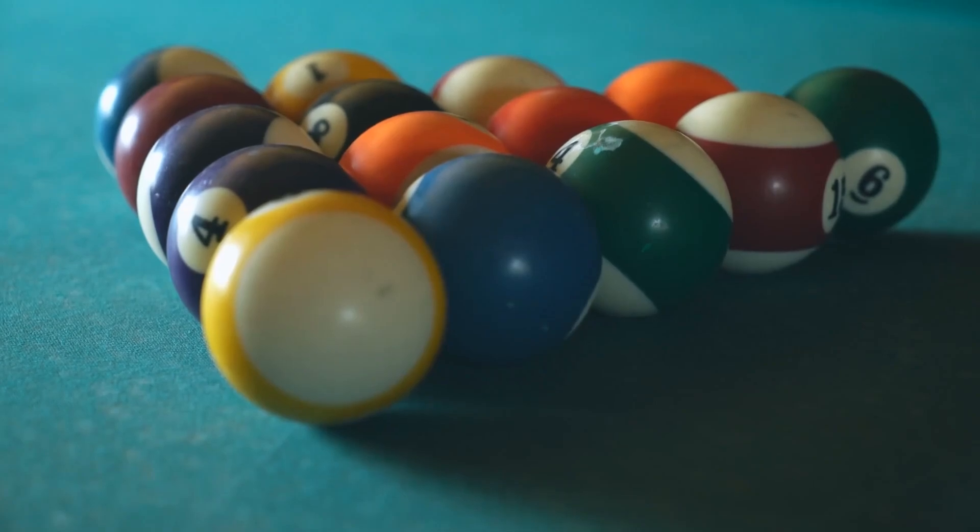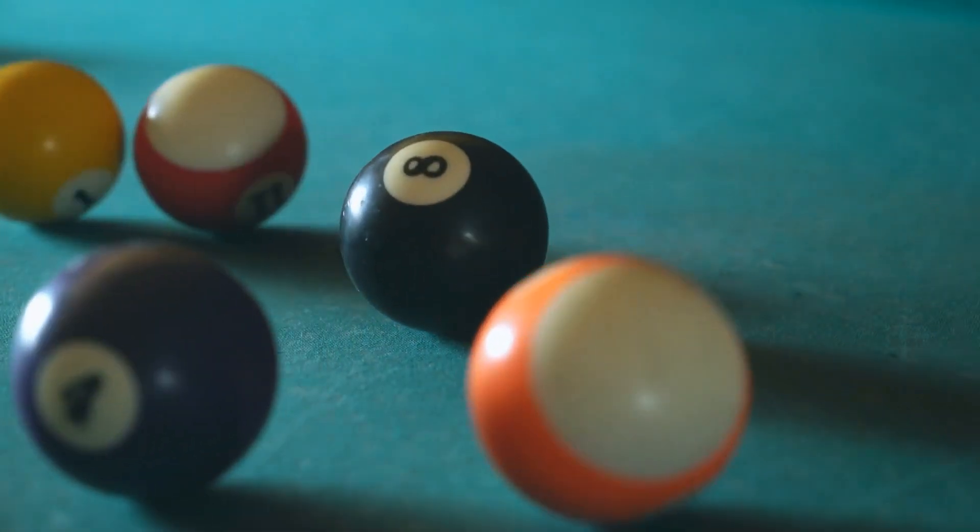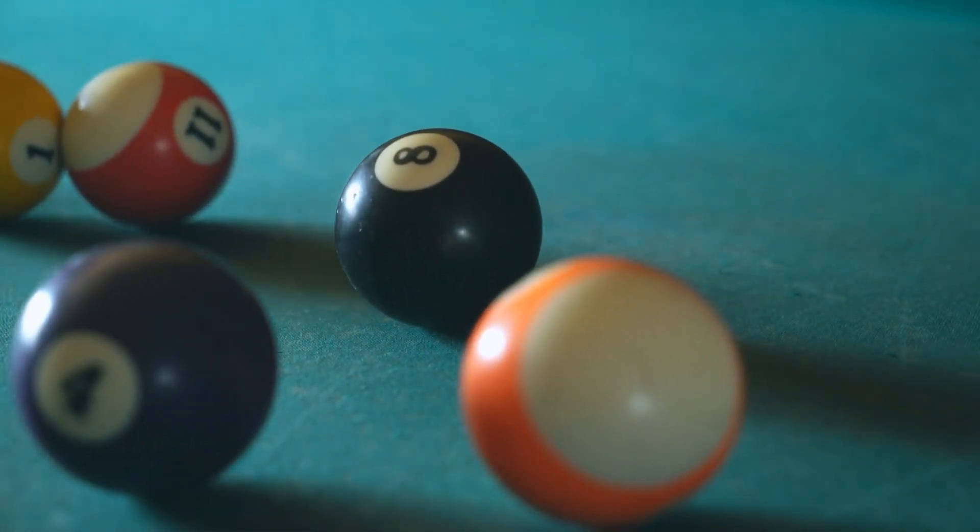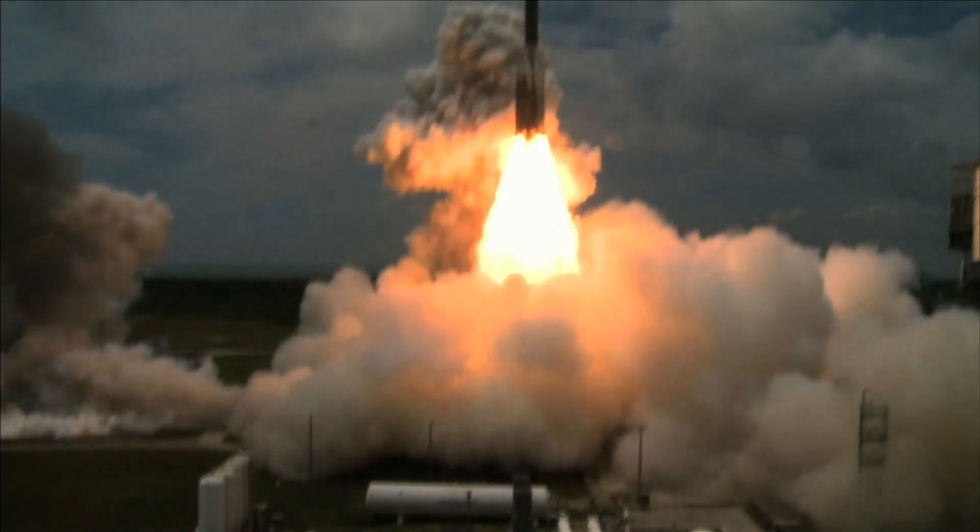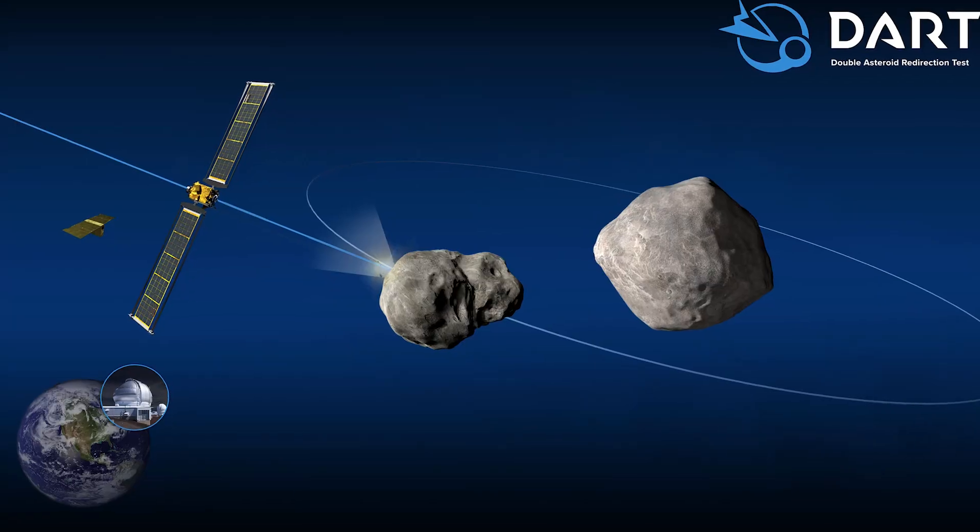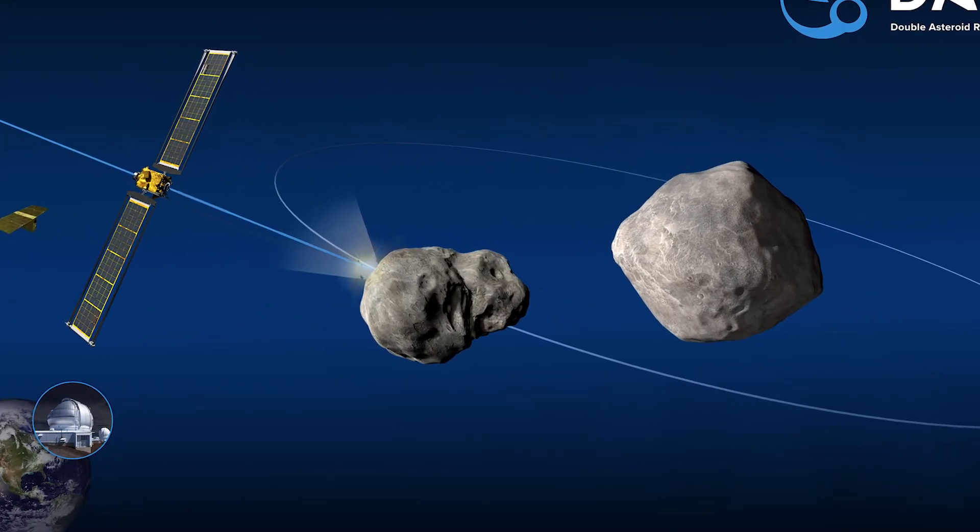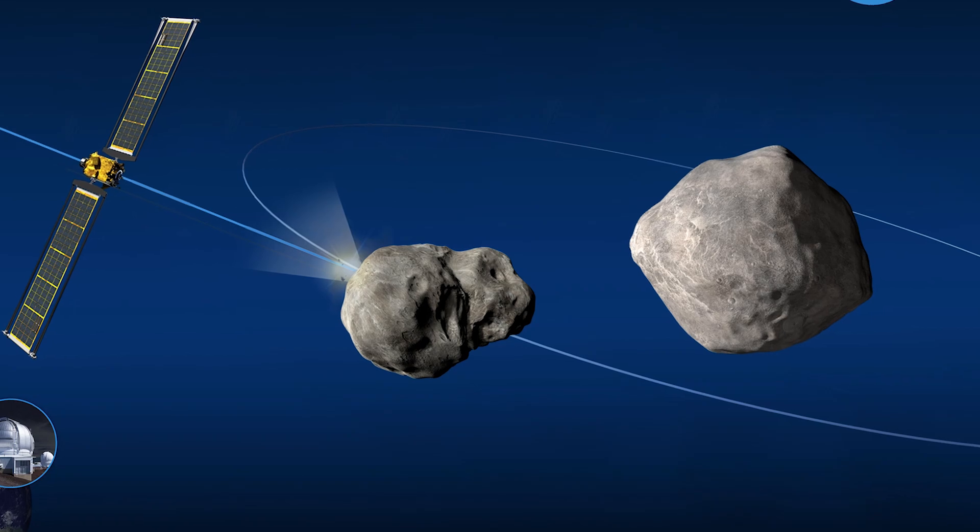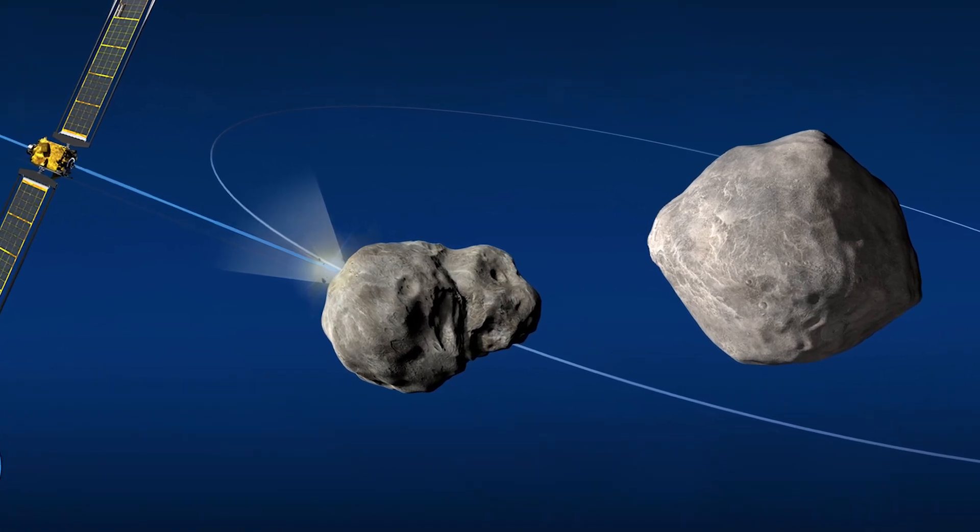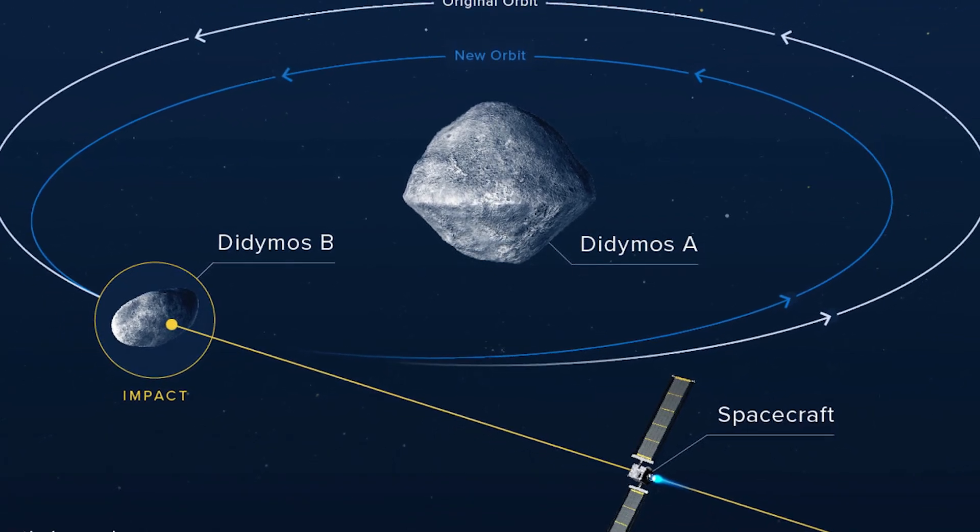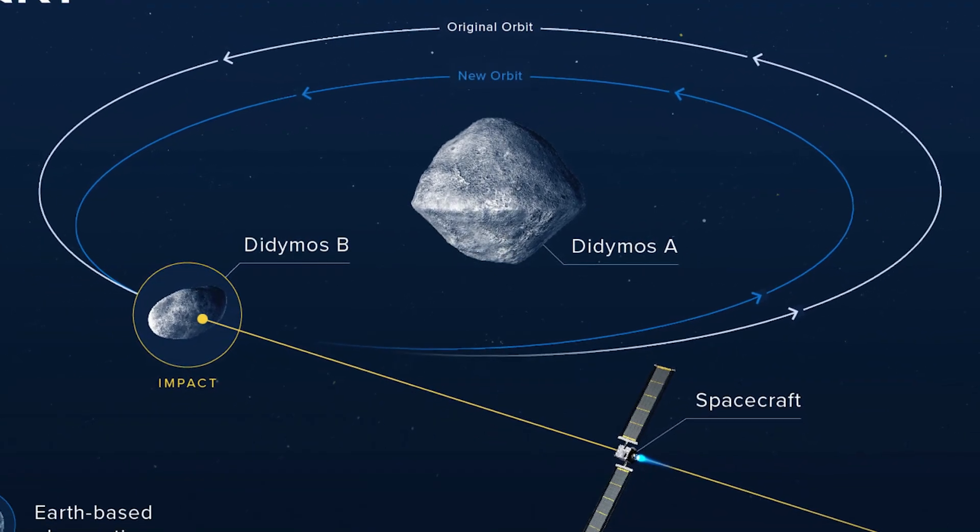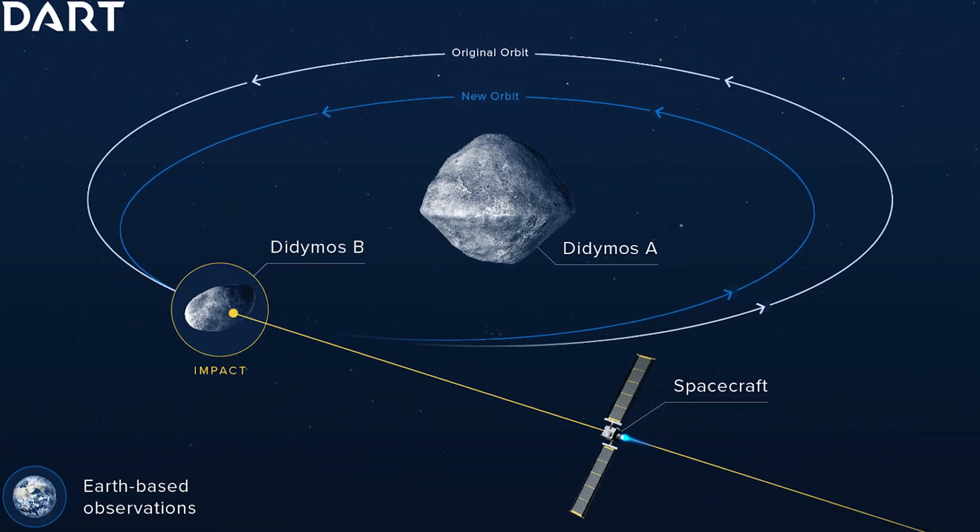Then there's this super-cool idea called kinetic impactors. Think of it as playing interstellar billiards. We send a spacecraft to smash into the asteroid at high speed, which changes its course. NASA's got this project called DART, the Double Asteroid Redirection Test, where they're actually going to try this out. They're planning to whack a spacecraft into an asteroid's little moon to see if they can change its orbit. It's like a real-life experiment to test out our planetary defense skills.